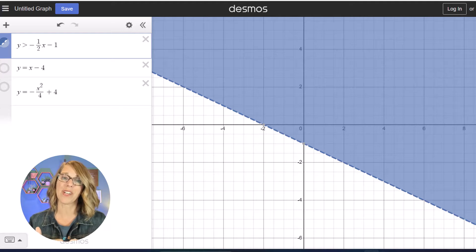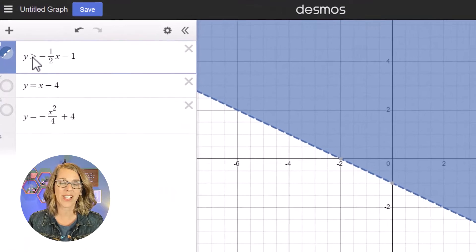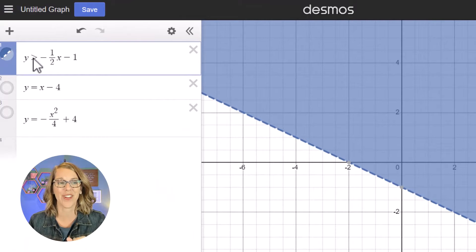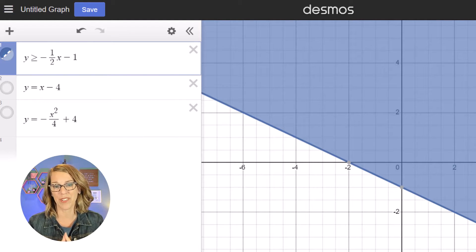If I want it to be on the line also, I want it greater than or equal to, so let's go ahead and throw in an equal sign. I'm gonna type it right next to the greater than and it changes it into a greater than or equal symbol.